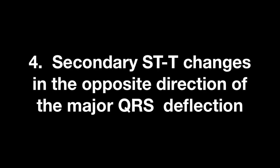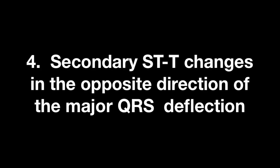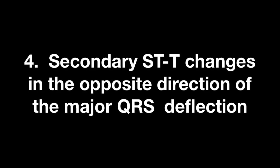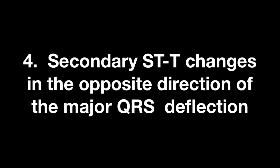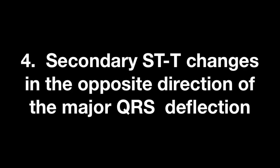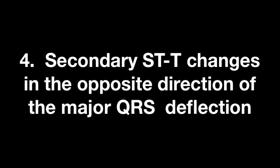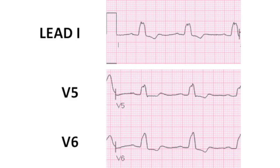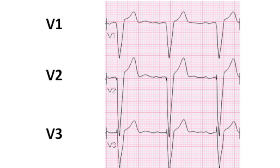The fourth ECG criteria are secondary ST and T-wave changes in the opposite direction of the major QRS deflection. You will see in leads I, V5, and V6 that with the QRS upright, you would expect ST depression and T-wave inversion, whereas in leads V1, V2, and V3, you would expect ST elevation.